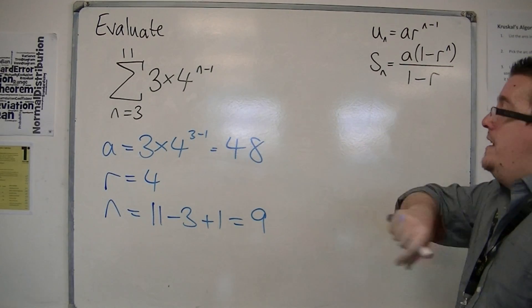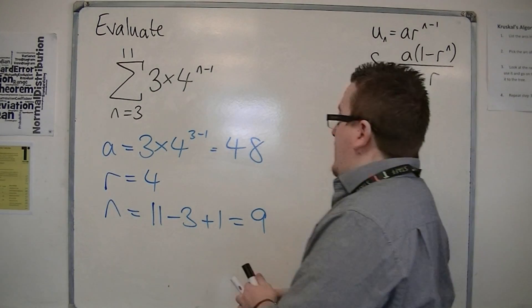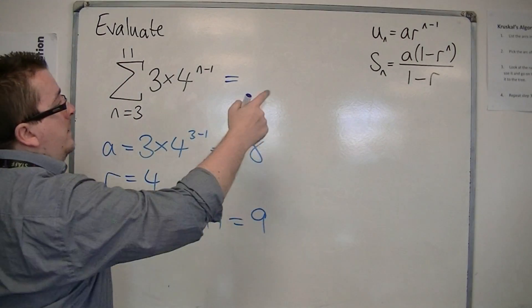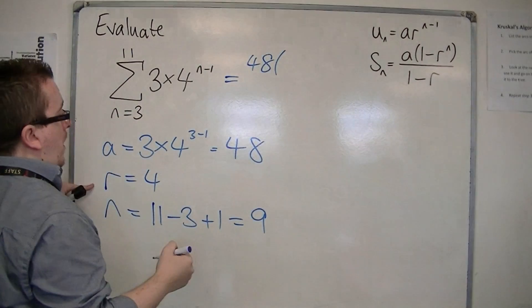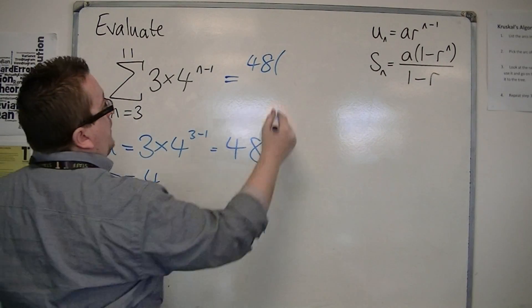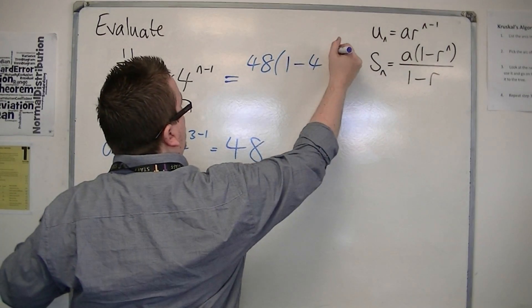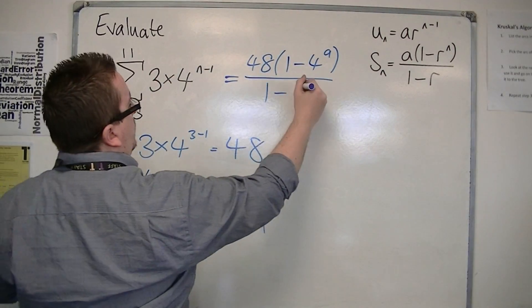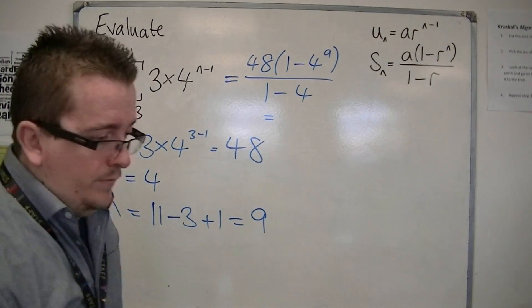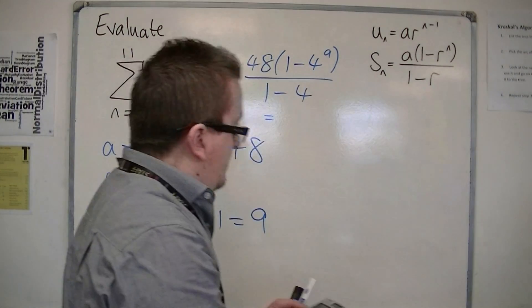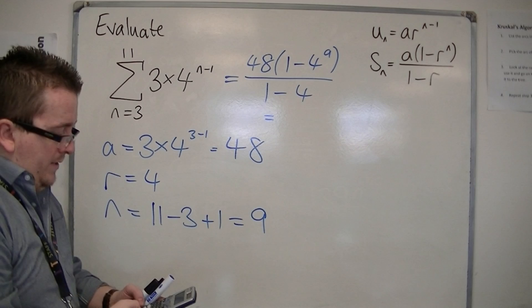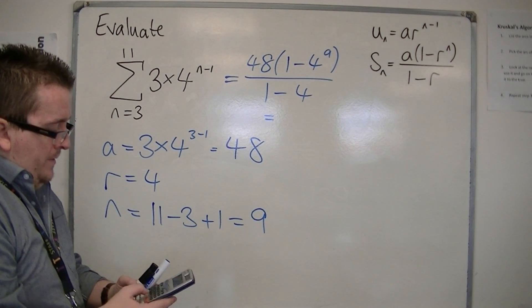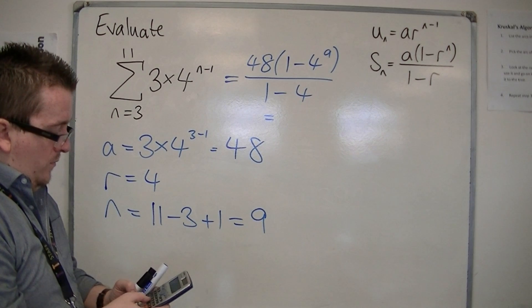So with that information in place, I can now say that this is equal to a, so 48 lots of one minus r to the n, so one minus four to the nine, all over one minus four. So I plug that into my calculator. 48 times one take four to the nine, divided by one minus four.